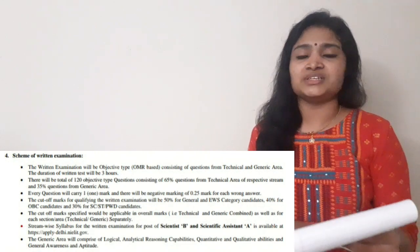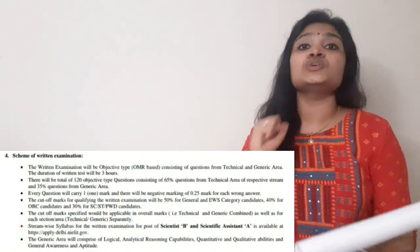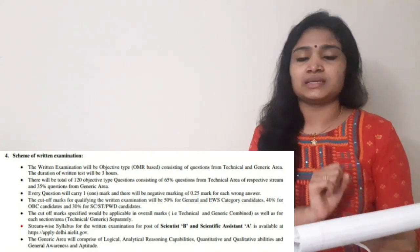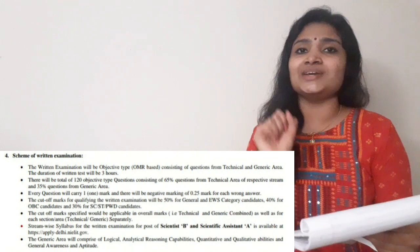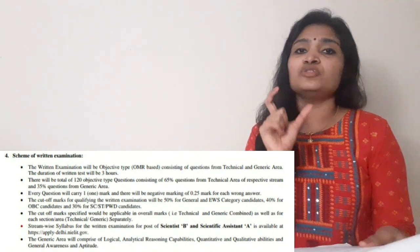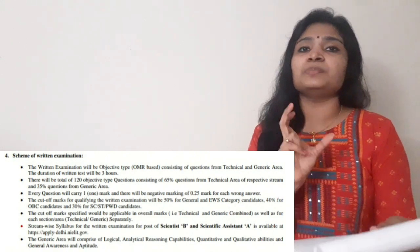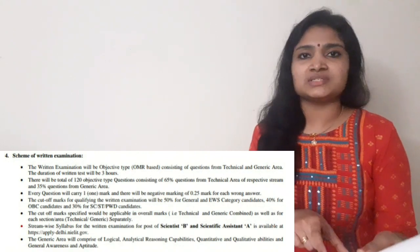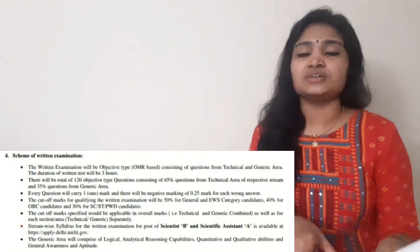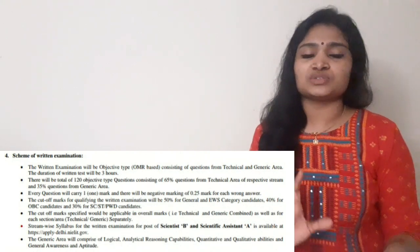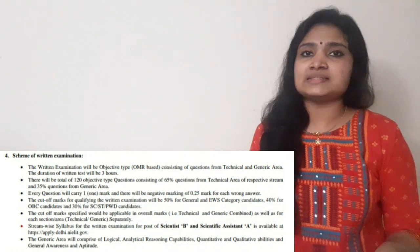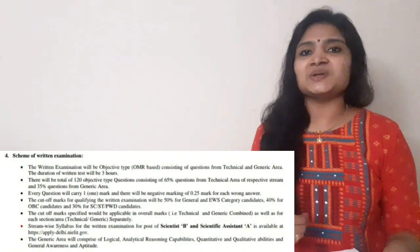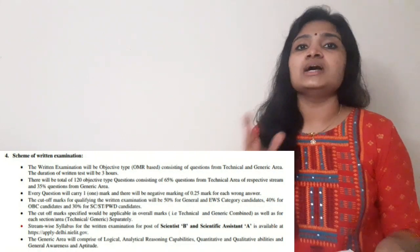The cutoff marks for various categories are clearly mentioned in the notification. For the General category, you need 50% to pass. For the Economically Weaker Section, 40% is required. For SC/ST and Persons with Disabilities, the cutoff is 35%. That covers the exam pattern, marking scheme, and cutoff percentages.